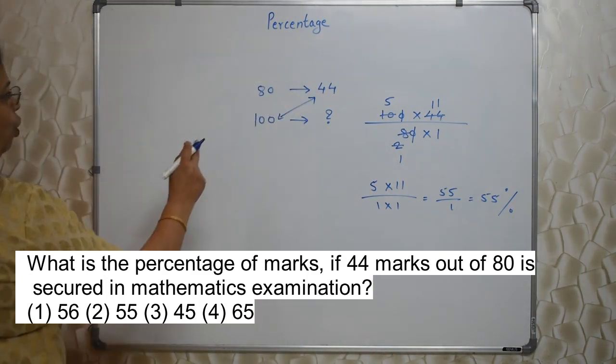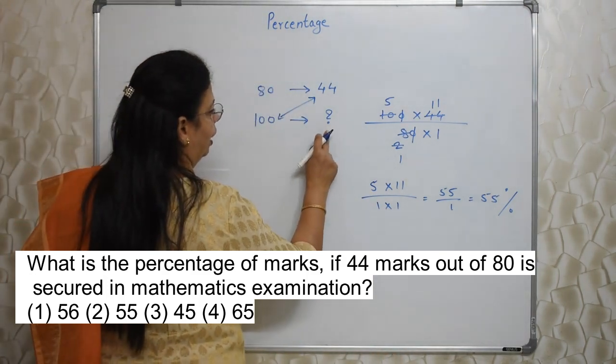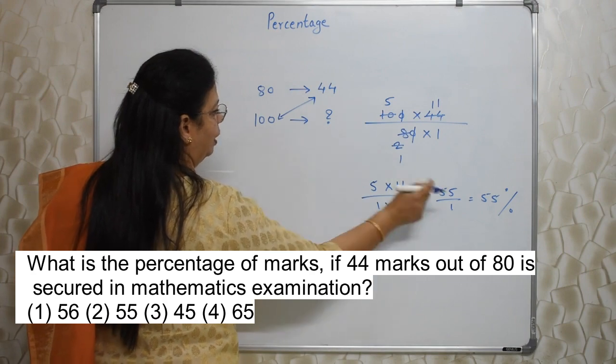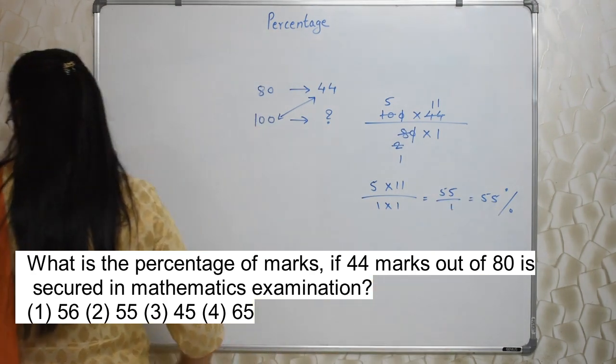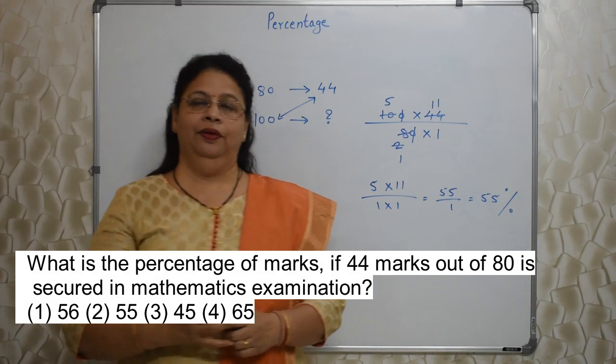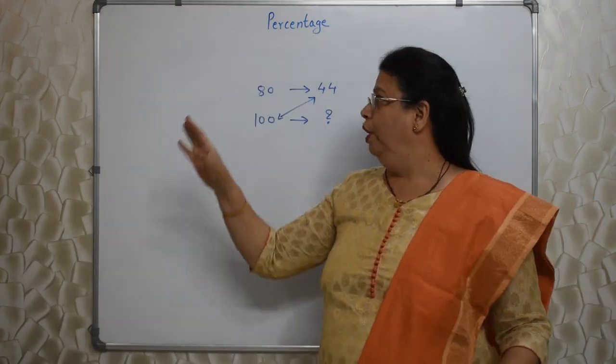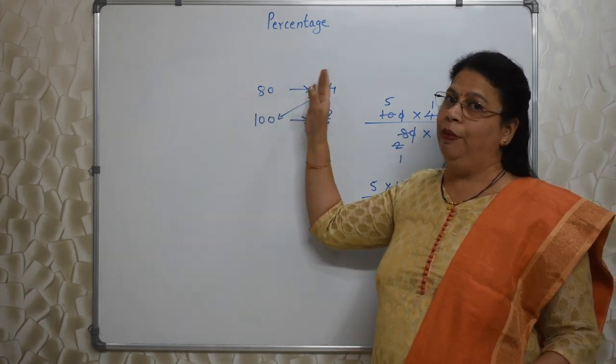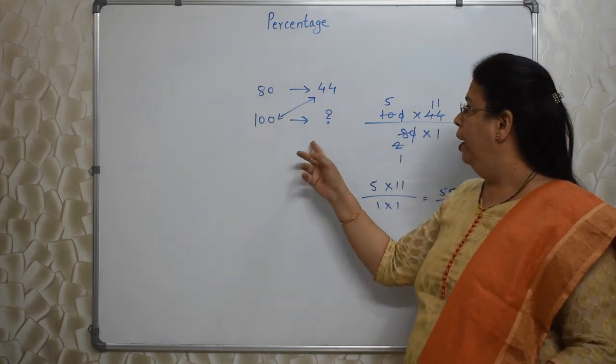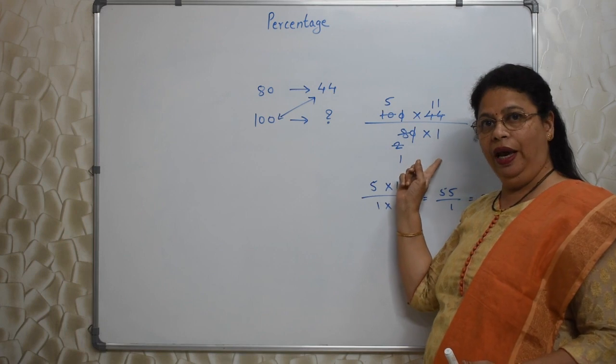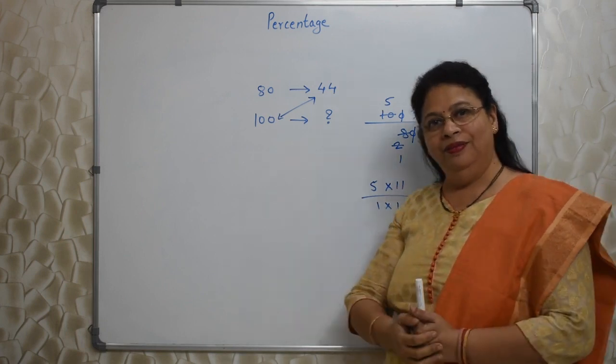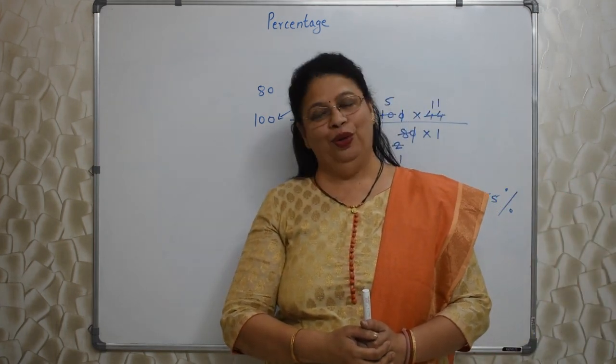55%. Out of 100, that student will get 55. Out of 100 means percentage. Isn't it easy? Nothing great in it. Whatever they have given, I have written in mathematical language and interpreted it. Cross multiplication deke, solve kya. Itna easy. Chalo.